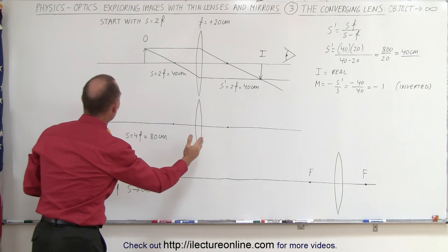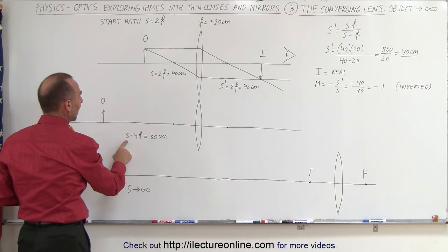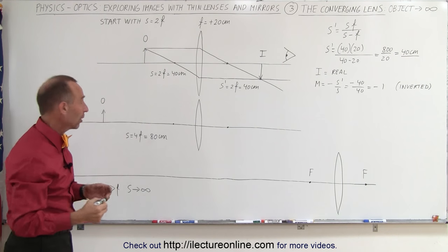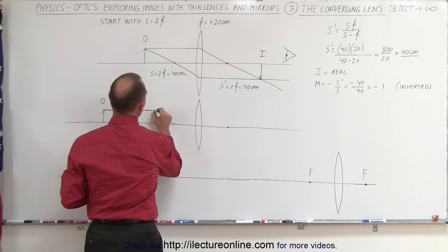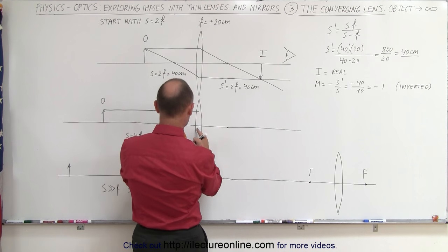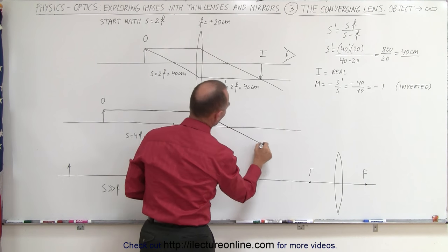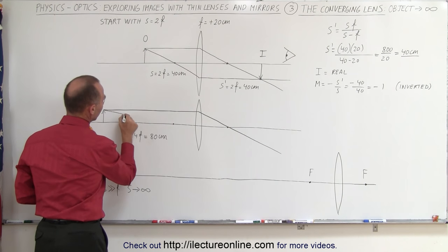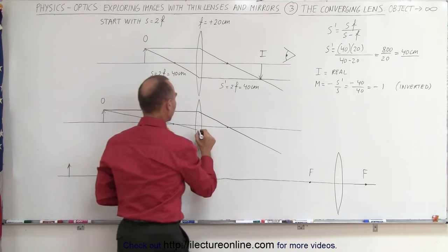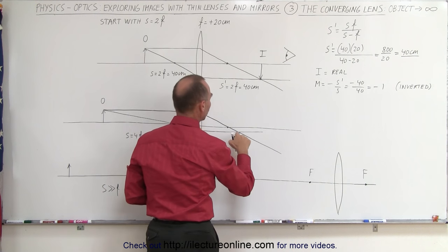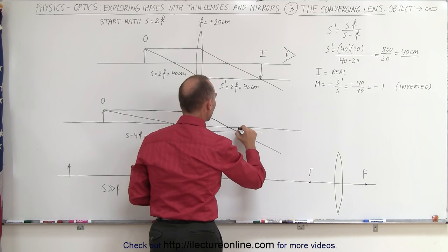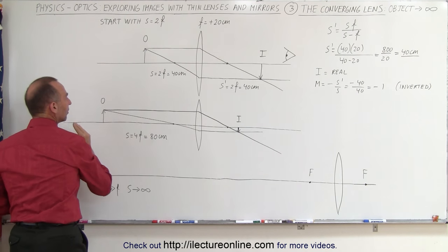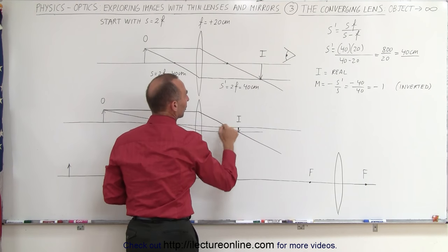Now what happens when you move the object farther away from the lens? Let's say the object is now four times the focal length, at a distance of 80 centimeters. We draw the horizontal ray parallel to the optical axis — it hits the focal point, bends, and goes through the focal point on the other side. The second ray is drawn from the top of the object through the focal point on this side, hits the lens, then continues parallel to the optical axis. Where the two lines cross, that is where you find the image. By moving the object farther away, the image has moved closer to the focal point on the other side.